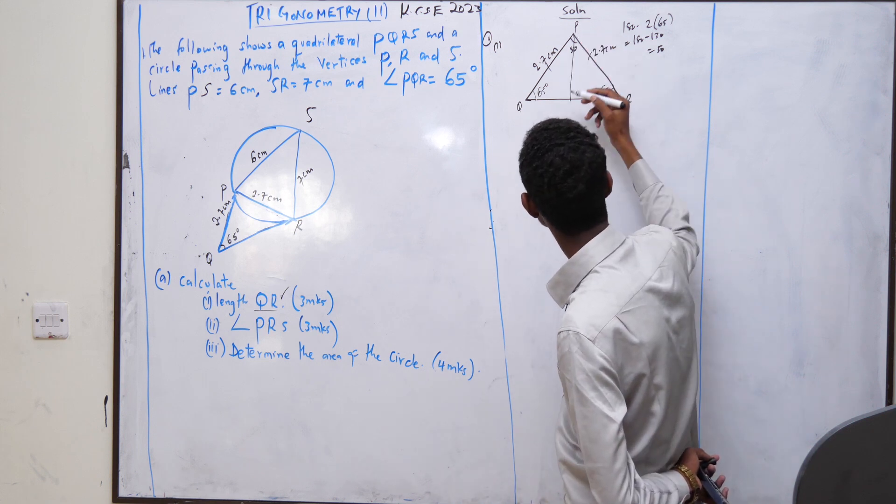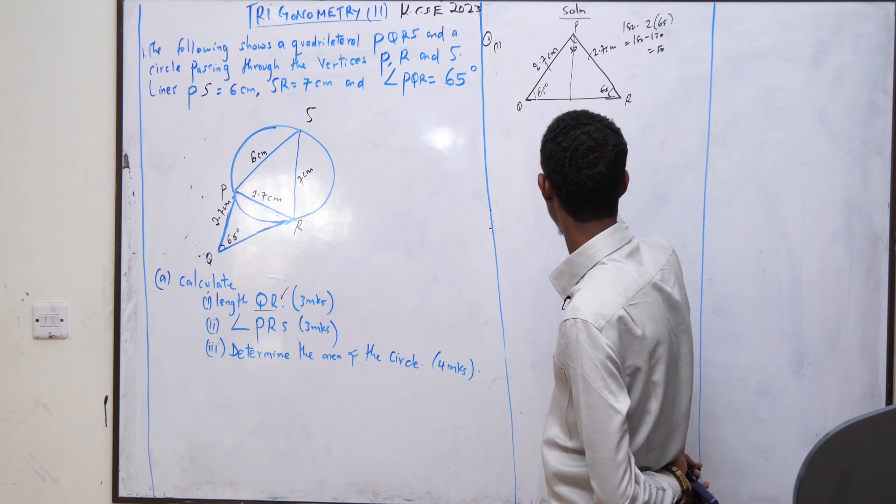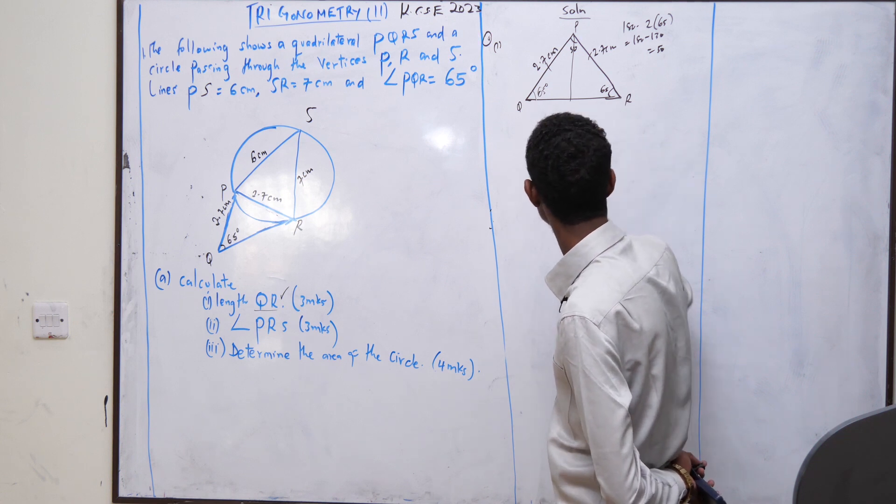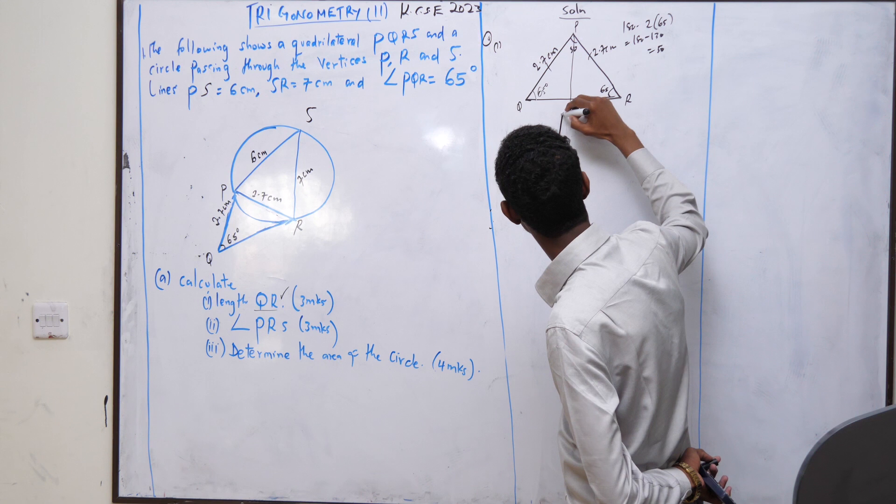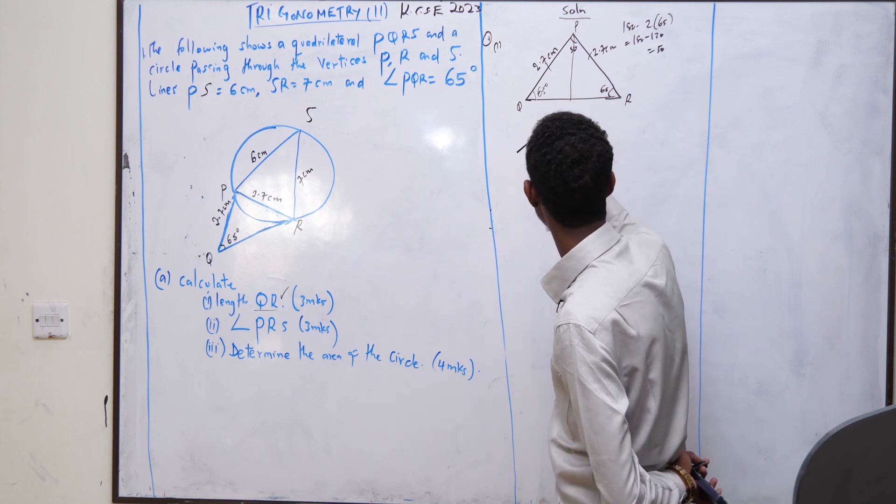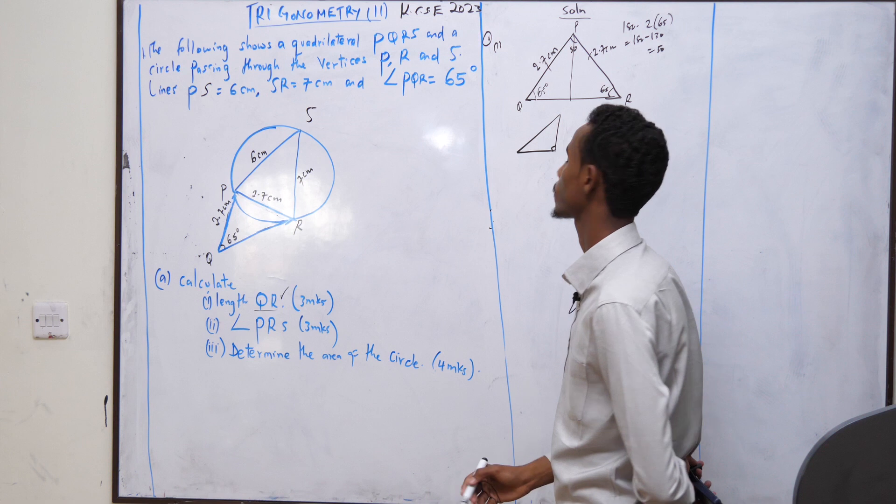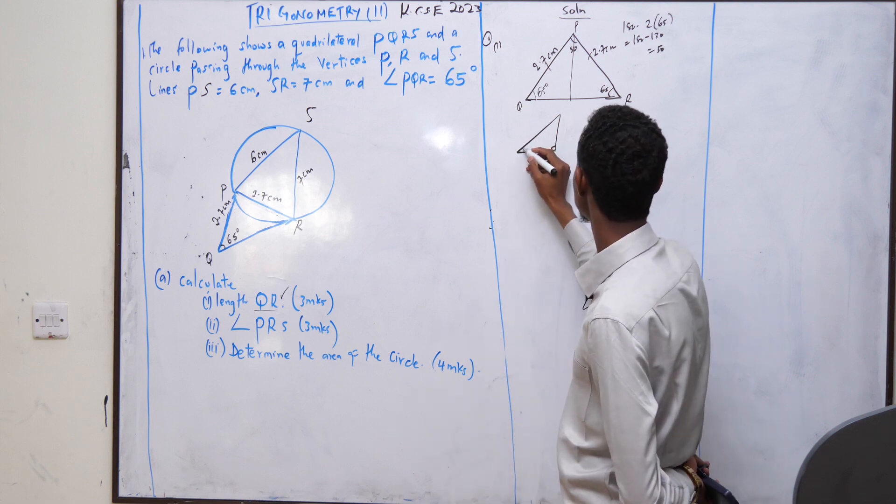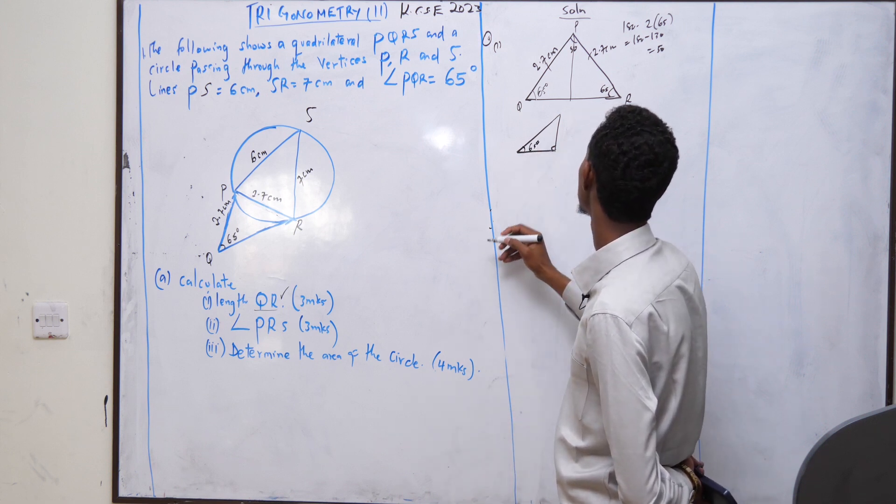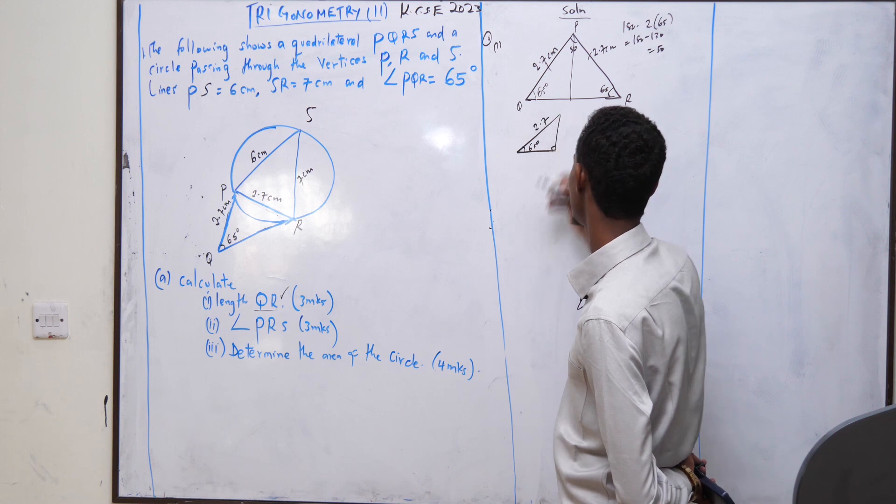Let's solve this equation like that. Take out that triangle. Let's say this is our line. We have here 65 degrees. We also have here 2.7.